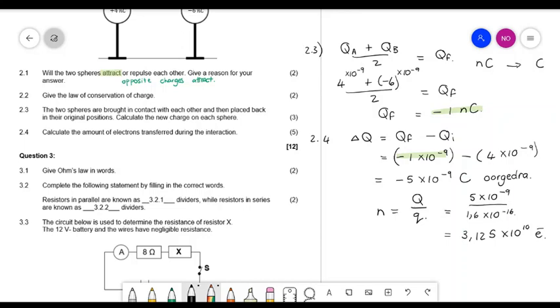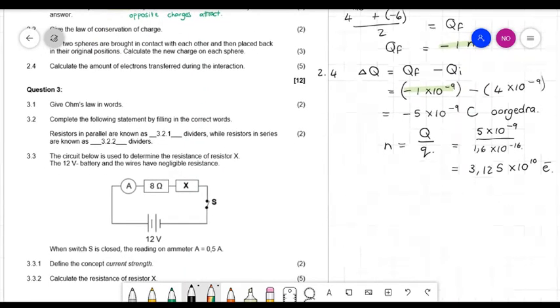Good, for question 3 I first ask you for Ohm's law in words. You can go and look at that again. And then I say complete the following statement by filling in the correct words. Resistors in parallel are known as blank dividers, while resistors in series are known as blank dividers. So in parallel, it's the potential difference, so potential difference dividers. And in series they are known as current dividers.